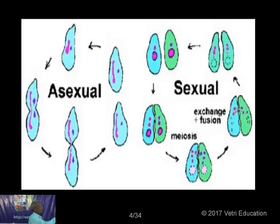Here you can see asexual reproduction in unicellular organisms. This method is called binary fission, which mostly happens in bacteria. In the case of yeast, it is by budding. If this is the yeast and it wants to reproduce, it puts forth a bud — this is the young one, the daughter yeast. The nucleus undergoes fission; half of the nucleus migrates, a wall is formed, and the daughter gets severed from the mother.